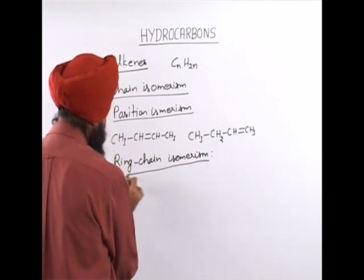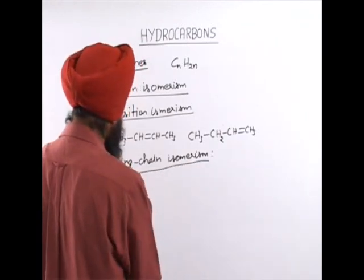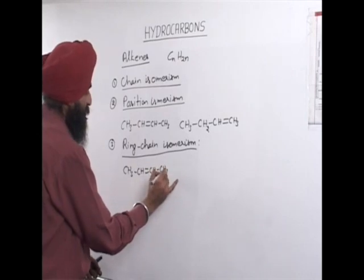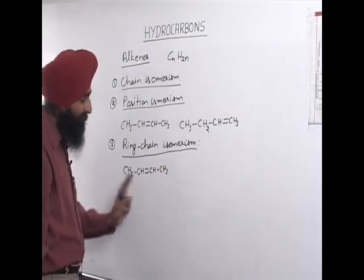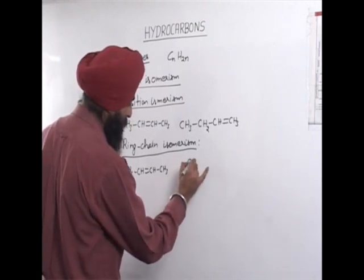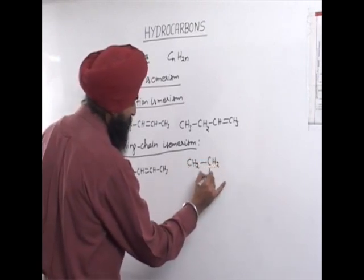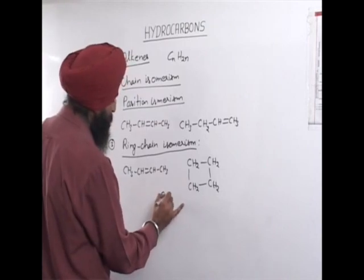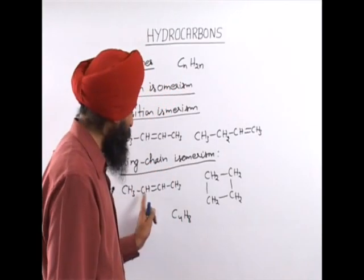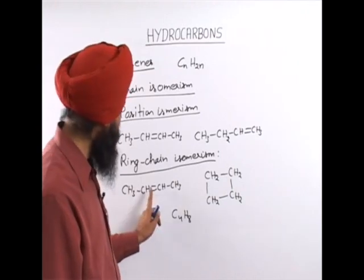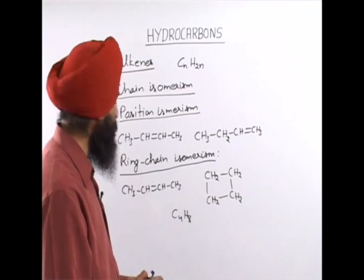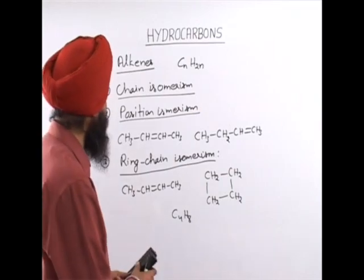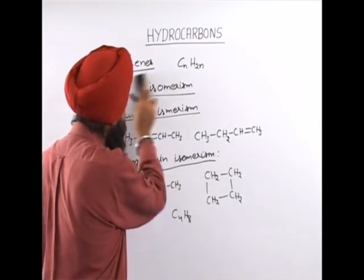Alkenes and cycloalkanes are ring-chain isomers of each other. For example, butene is an open-chain alkene, and cyclobutane is a cycloalkane — both have the same general molecular formula C4H8. One has an open chain with a double bond, and the other is a cycloalkane. In this way, alkenes show these three types of structural isomerism.